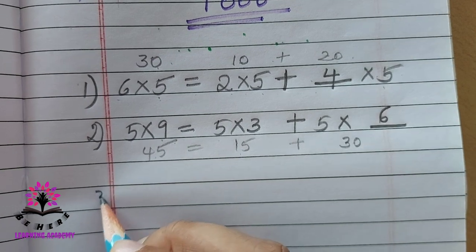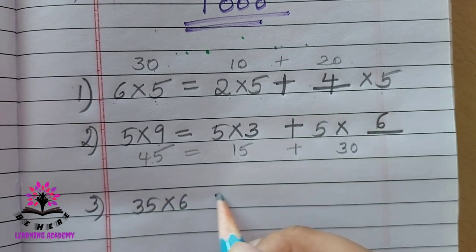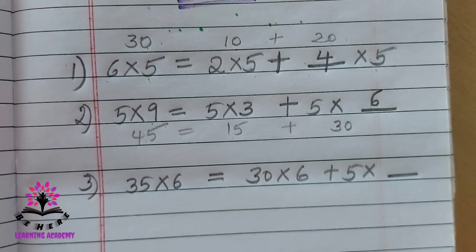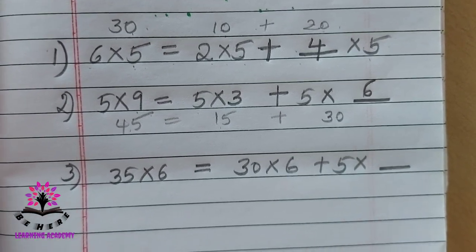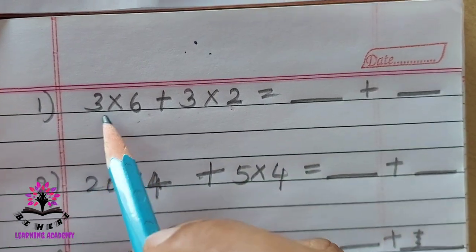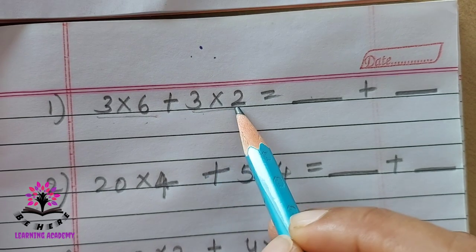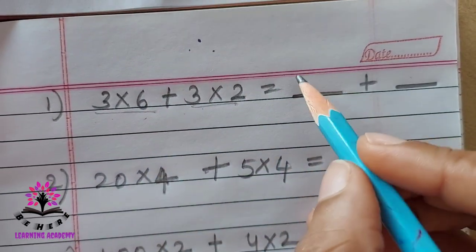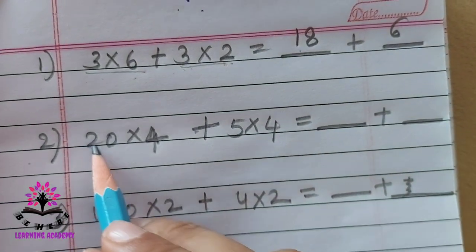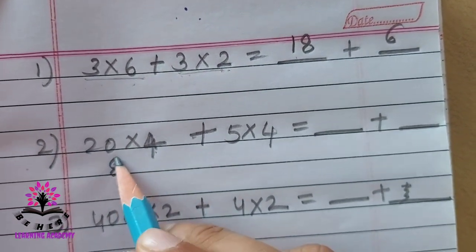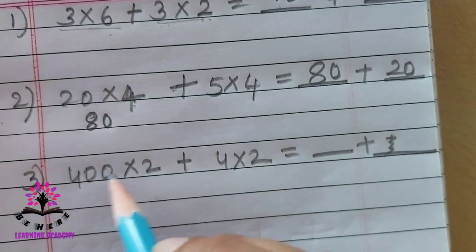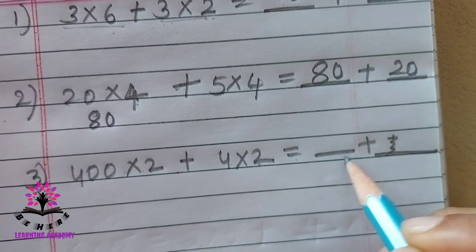One more problem: 35 into 6 equals 30 into 6 plus 5 into dash. Solve this problem by yourself, children. See this problem: 3 into 6 plus 3 into 2 is equal to dash into dash. Multiply: 3 times 6 is 18 and 3 times 2 is 6. See the second one: 20 into 4. 4 times 2 is 8, so 20 times 4 is 80. And 5 times 4 is 20. Then 400 into 2 plus 4 into 2 equals dash plus dash — solve this problem.